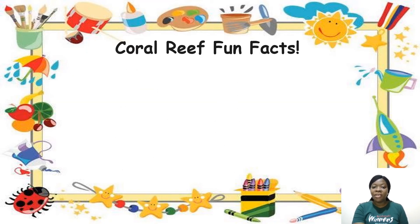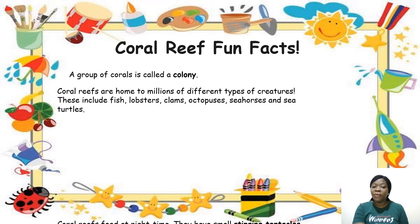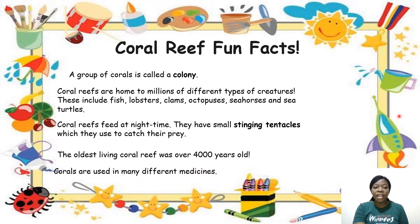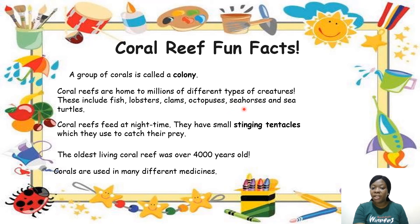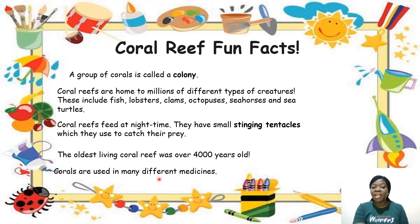Let's look at some fun facts about coral before you go off to do your task. A group of corals is called a colony. Coral reefs are home to millions of different types of creatures, including fish, lobsters, clams, octopus, seahorses, and sea turtles. Coral reefs feed at night time — they have small stinging tentacles which they use to catch their prey. The oldest living coral reef was over 4,000 years old. Corals are also used in many different medicines.